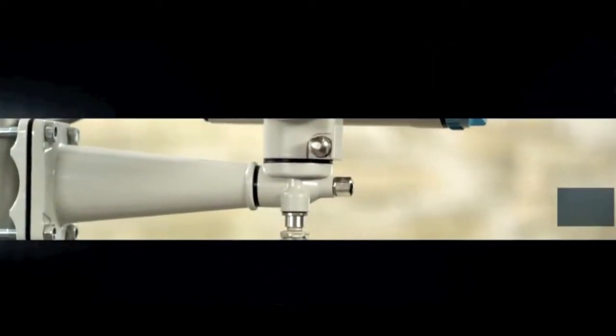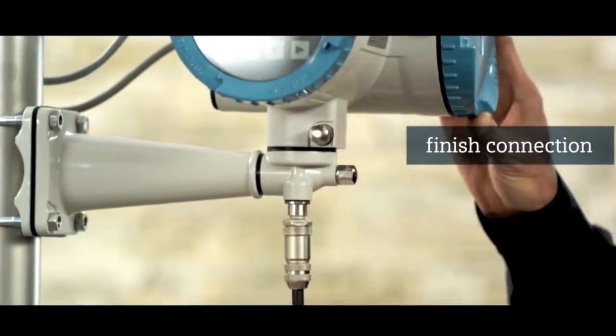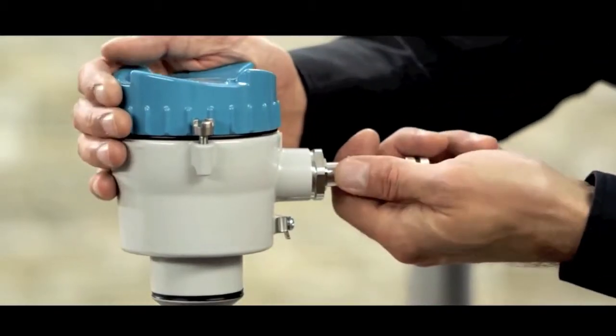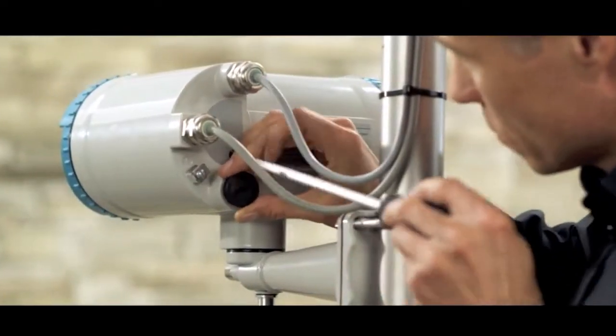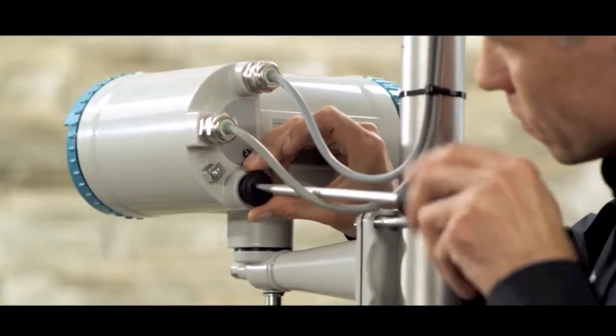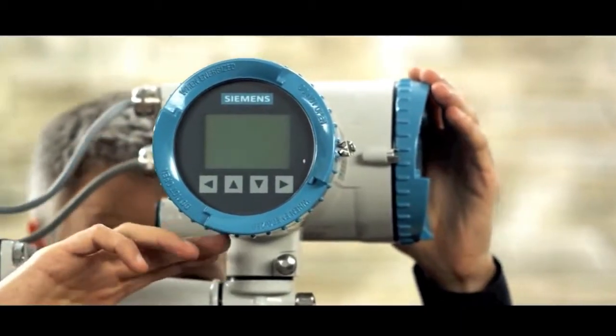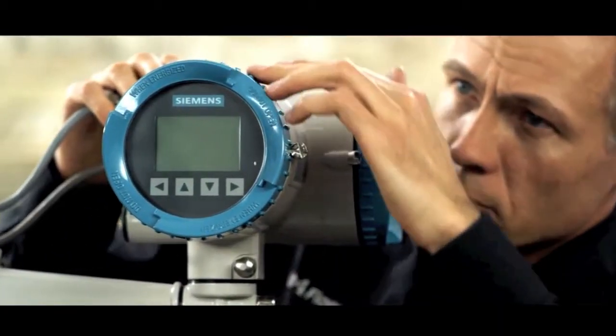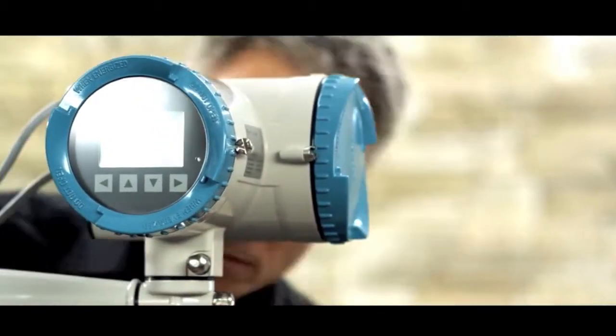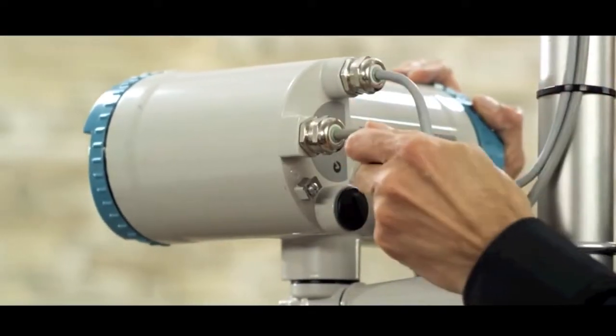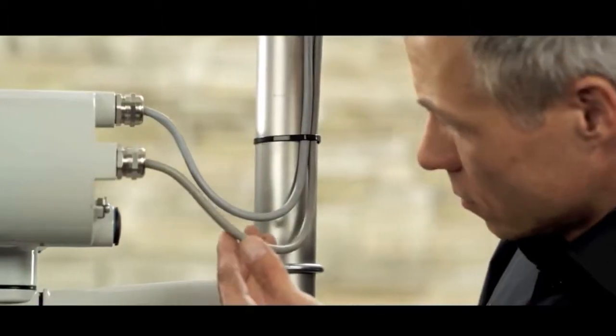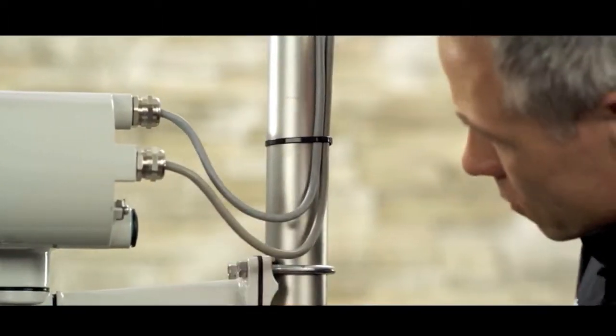Finally, check each cable to ensure that the connections are clean and solid. Screw the blind plugs into any empty cable inlets. Check that the O-ring of the display is correctly positioned. Make sure no moisture can get inside the electronics housing. You can use a drip loop to prevent water droplets from penetrating the cable inlet.